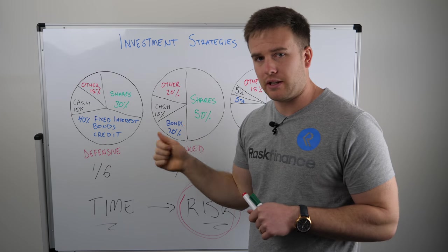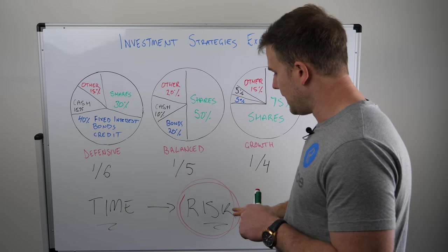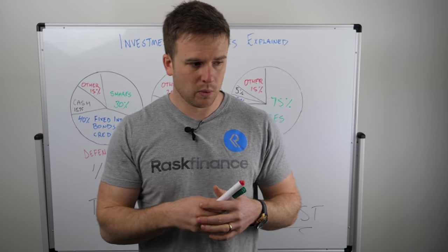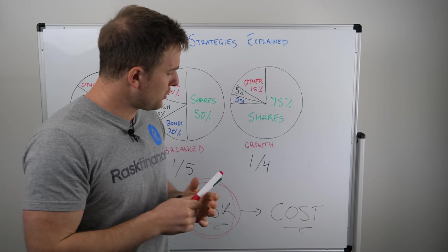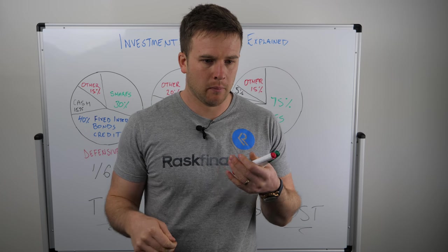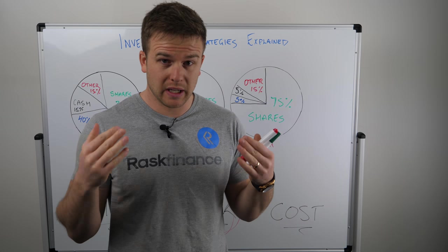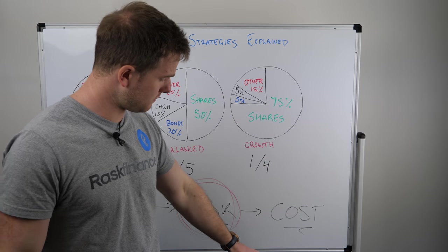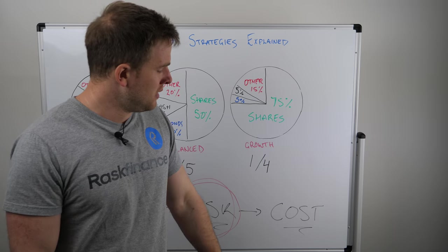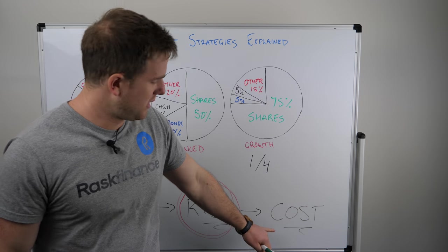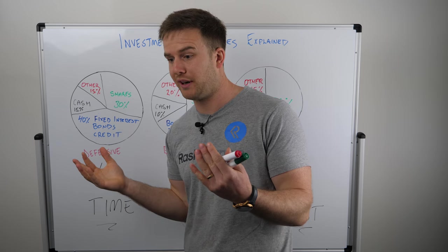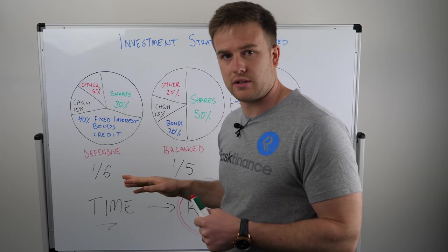Once you've worked out which strategy suits you and which super fund you're considering, the next important thing to look at is cost. I've read that a one percent difference in fees and costs can lead to twenty percent less money after thirty years. You might think that's a long way off, but if it takes you 45 minutes to shop around, you could be saving yourself twenty percent of your future money — so it's absolutely worth comparing costs.